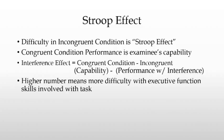A higher number means that they had more difficulty with executive functions involved in this task — being able to inhibit attention to competing stimuli and being able to focus on one object at a time. A higher number means they did better on the congruent condition and less well on the incongruent condition. If it's a smaller number, that means their performance tended to be more equal in those conditions. This is the basis from which the nonverbal Stroop card sorting test is derived.